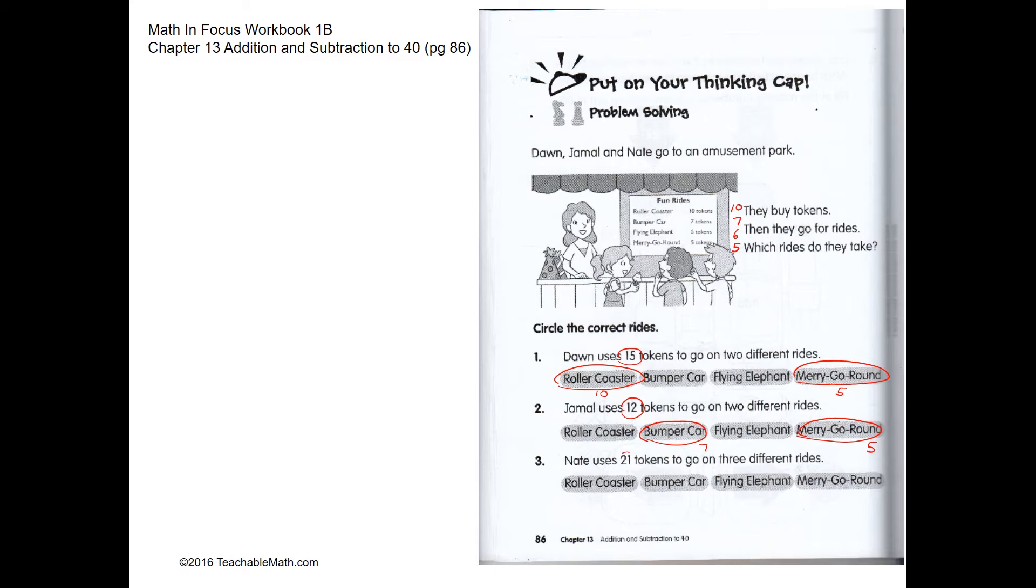Next we need twenty-one, and we need three different rides. So we need three different numbers that make twenty-one. We're going to go on the roller coaster which is ten, the flying elephant which is six, and the merry-go-round which is five. Ten, six and five make twenty-one.